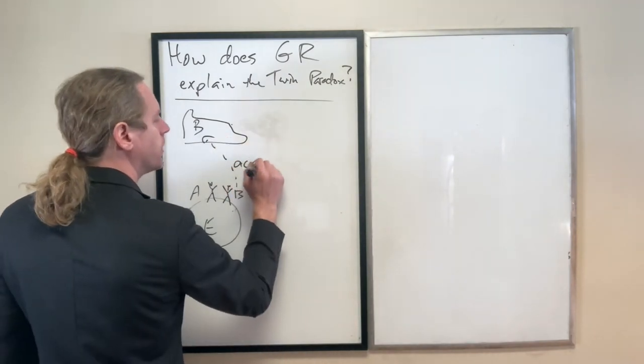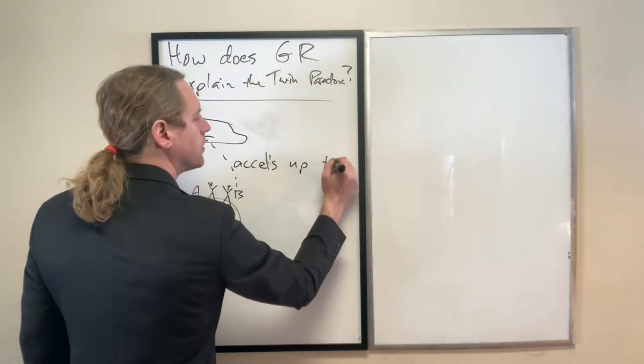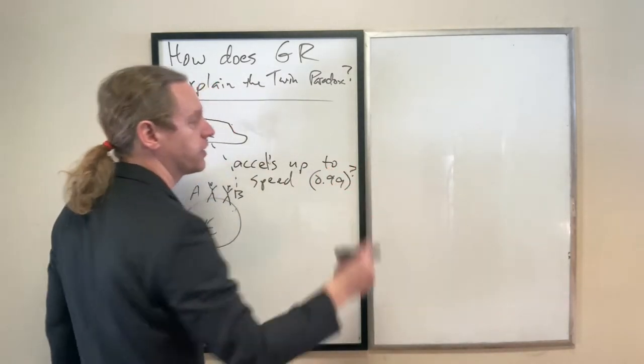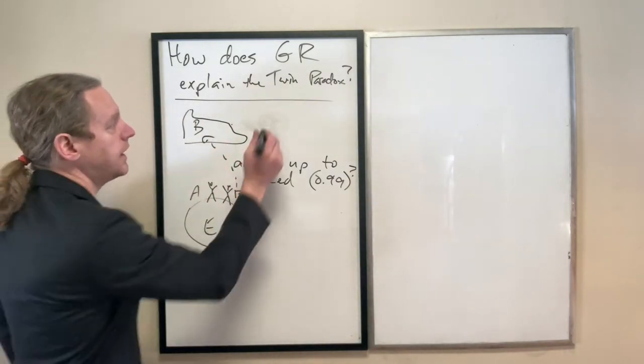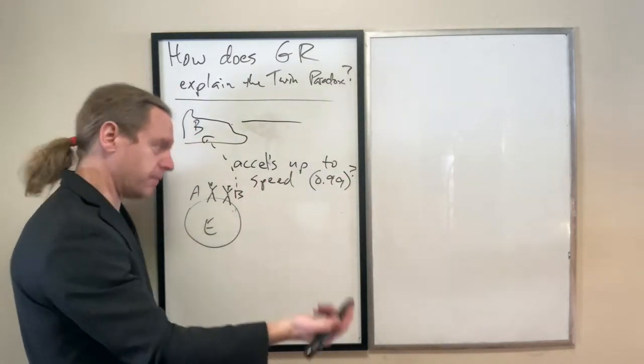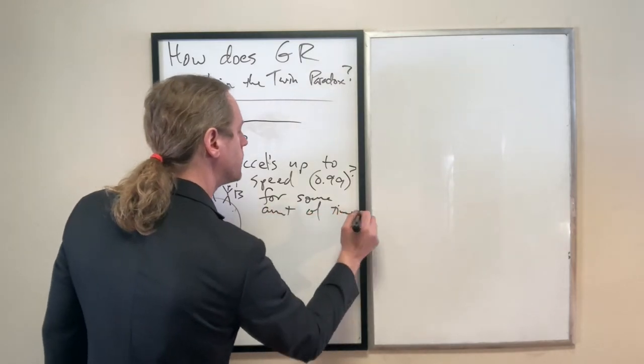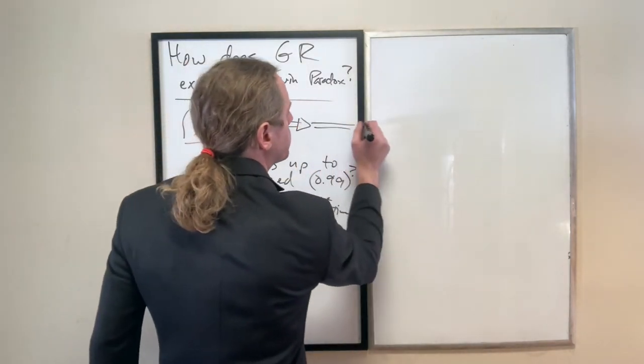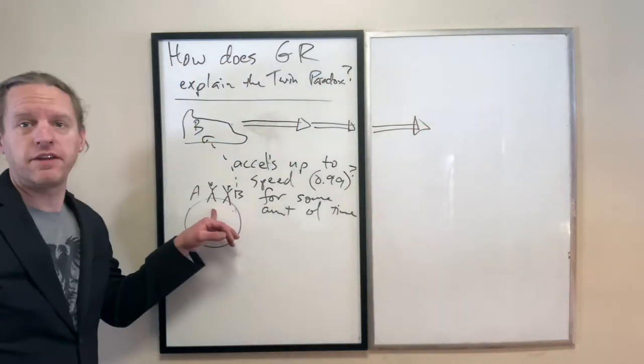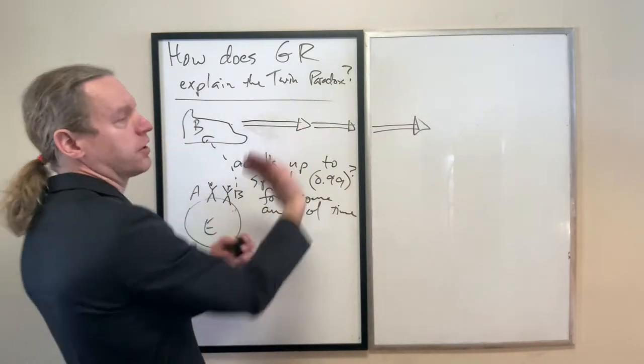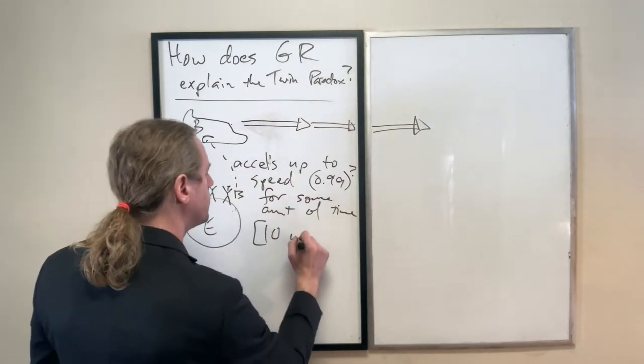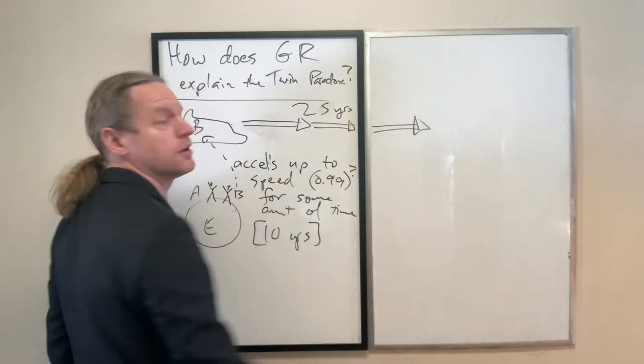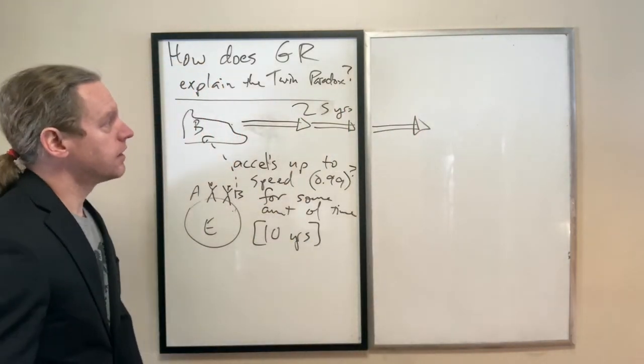Person B accelerates up to speed, which might be 0.999% the speed of light or whatever. They're accelerating to an extremely high amount. They're going to move forward through the universe for what to this guy might seem like 40 years. Let's say maybe for the first 10 years, they're coming up to speed. It takes them 10 years to get to speed. For the next 20 years, 25 years, they're going to be going this way here.